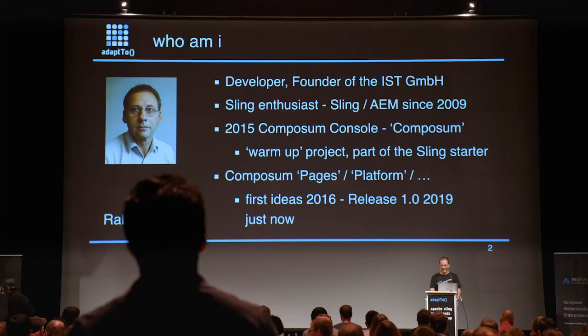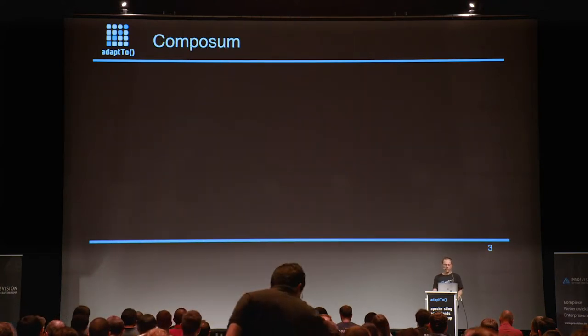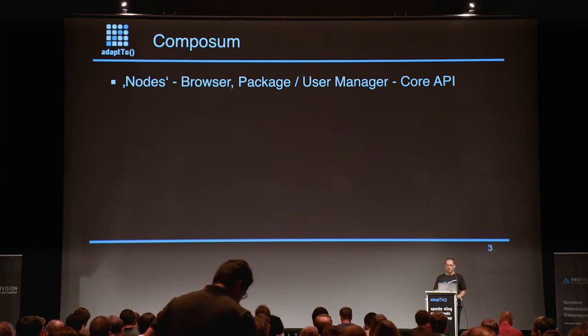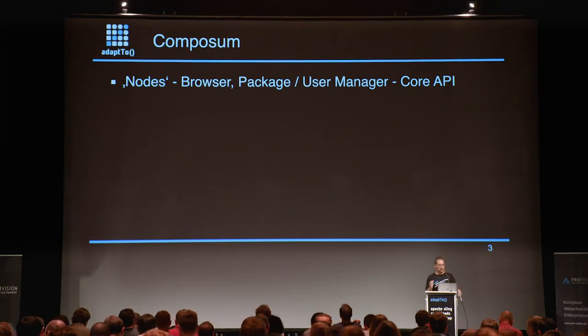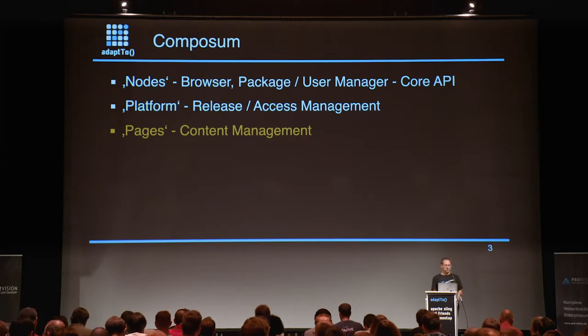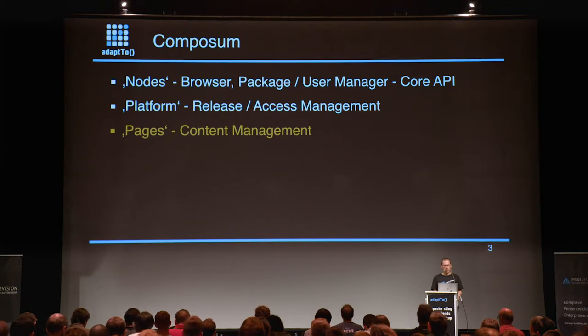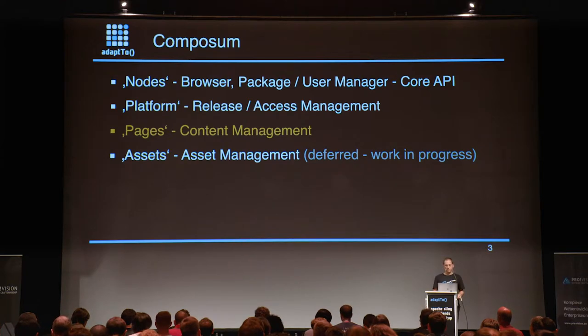After a long time of work, last week we published our first final release of Composum Pages. This is a CMS, and I think it's a little bit similar to AEM — and it's open source. Composum consists of several modules. Currently there are four: the Nodes module contains the console API, which is the framework. The Platform module is a service module for release and access management. The Pages module is a content management solution. And the Assets module is also in development since 2015, but is currently deferred pending a refactoring to support the release management implemented in the Platform module.